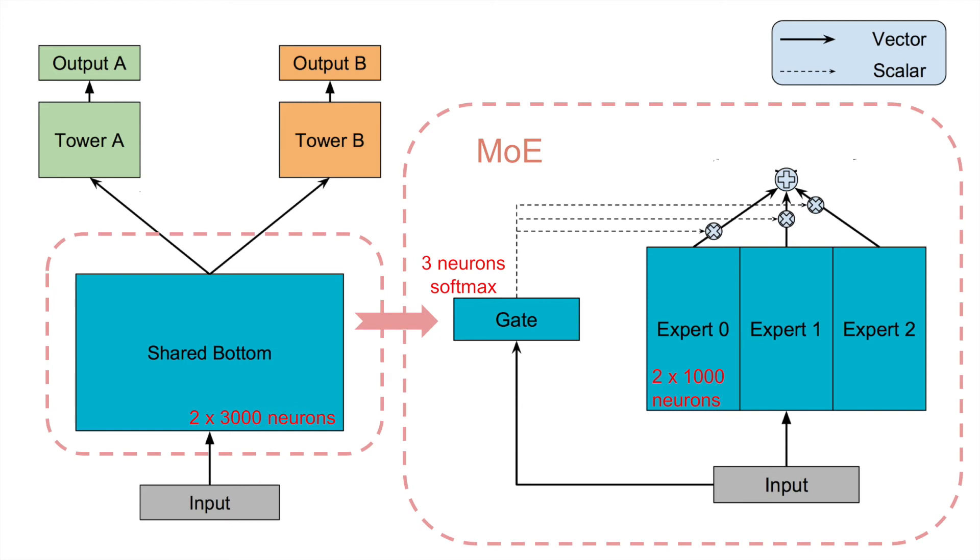We split the shared bottom part into some smaller expert networks. In this example, there are three experts. Then we have a gate network, which is a linear network followed by a softmax. The outputs of the three expert networks will be weighted by the gate network and summed together.